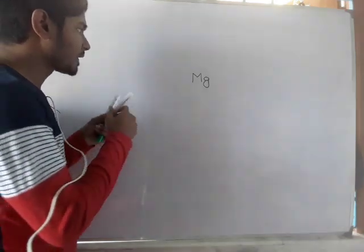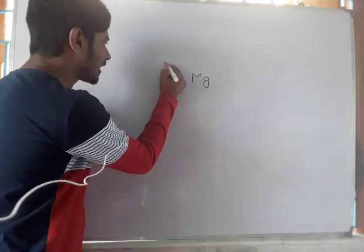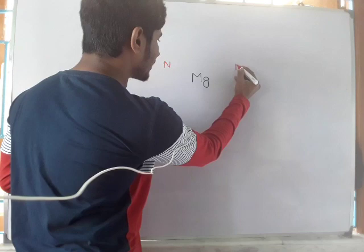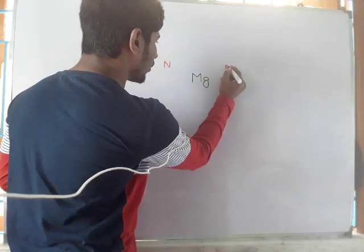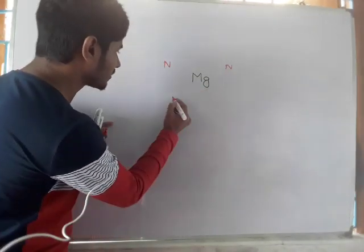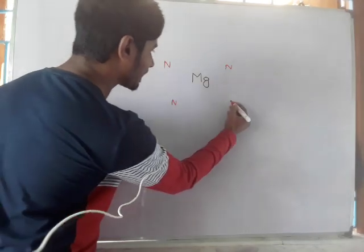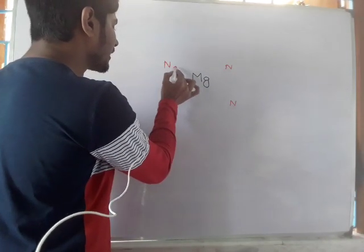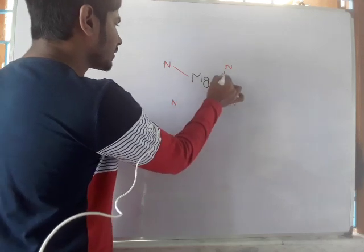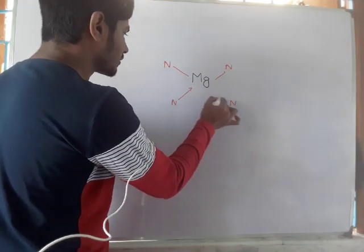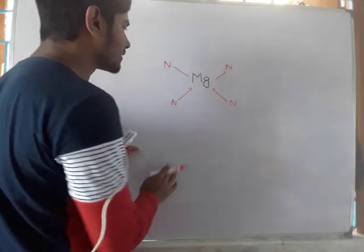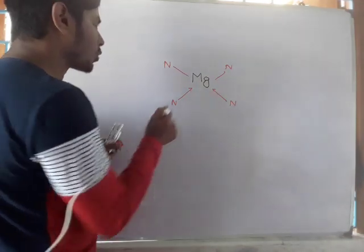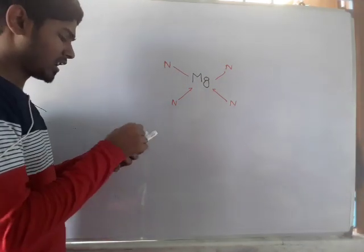Okay, so if you want to draw the structure of chlorophyll, then first write magnesium and then give the nitrogens of the pyrrole ring. Then give the bonds, so these are the single bonds and these are the coordinate bonds.